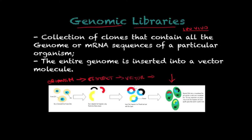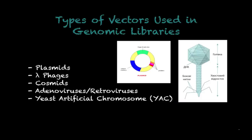This is a simplified way to understand a genomic library. Now looking at what I've written here — this is just another way to explain what I described. On this slide I want to talk about the types of vectors used to build genomic libraries. A vector is a nucleic acid molecule that can replicate in a host cell and will also replicate the nucleic acid inserted into it.